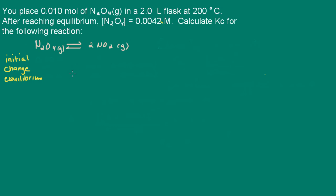In this problem, we place 0.010 moles of dinitrogen tetroxide in a 2-liter flask at 200 degrees Celsius. After reaching equilibrium, the concentration of dinitrogen tetroxide is 0.0042 molar. It says calculate K for the following reaction.